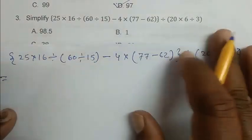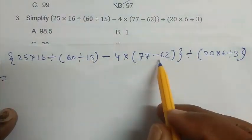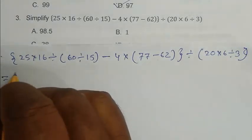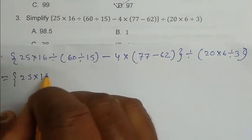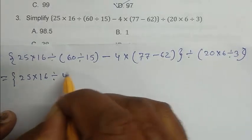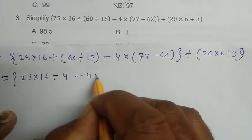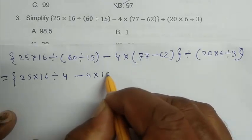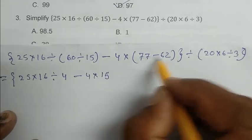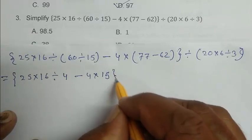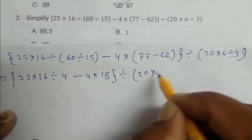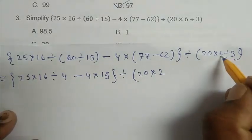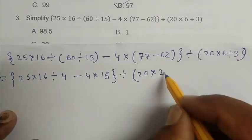So from BODMAS rule bracket is first. So we calculate 25 into 16 divided by 4 minus 4 into 15. This bracket it is 15 divided by 20 into 2. We divide the 6 by 3 we get 2.